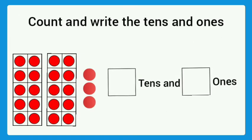Count and write the tens and ones. In the first box there are 10 circles. Second box also 10 circles and 3 other circles. So here 2 tens and 3 ones.